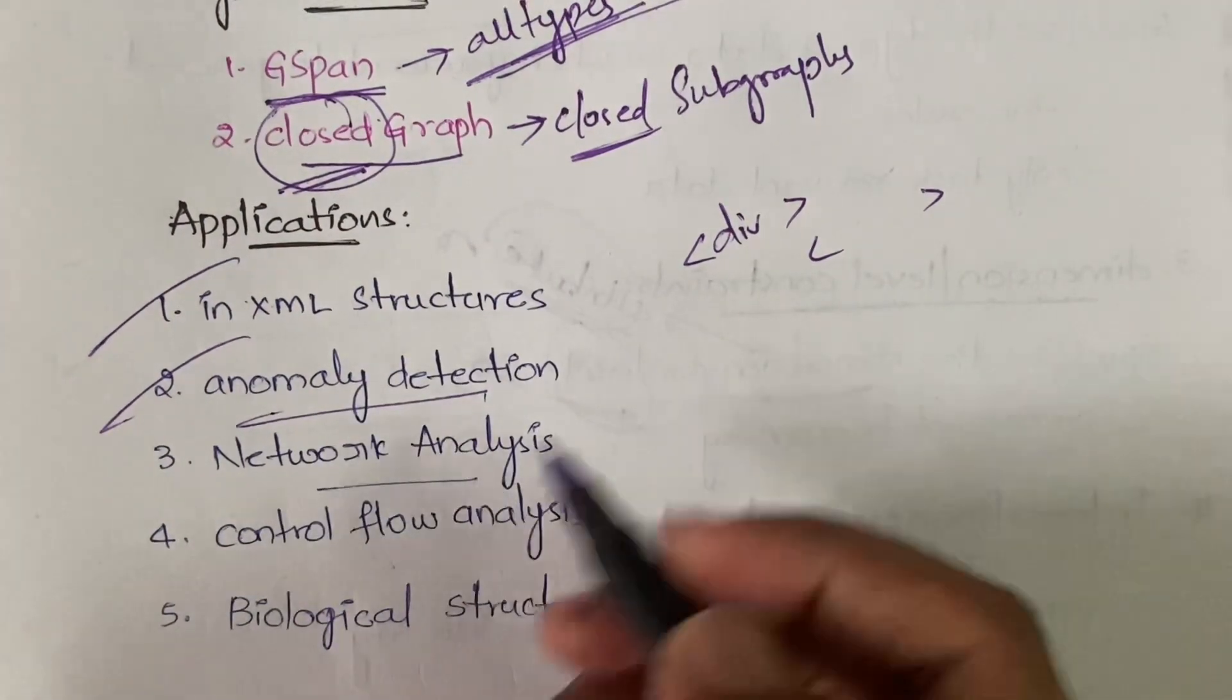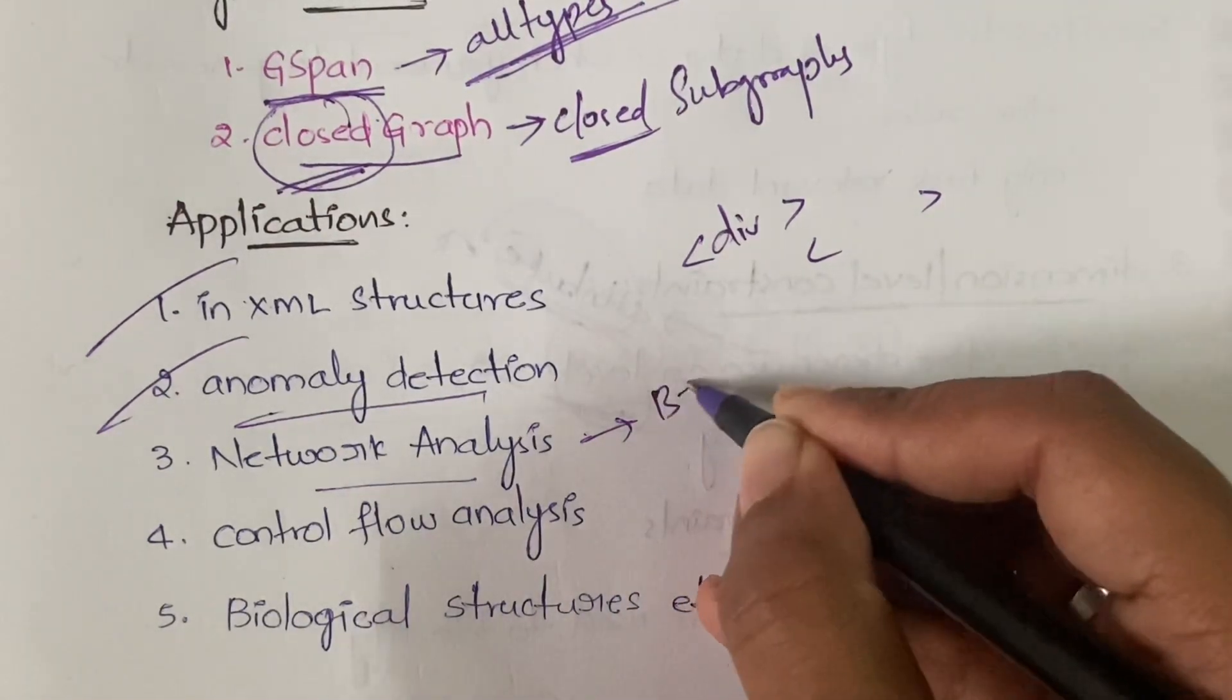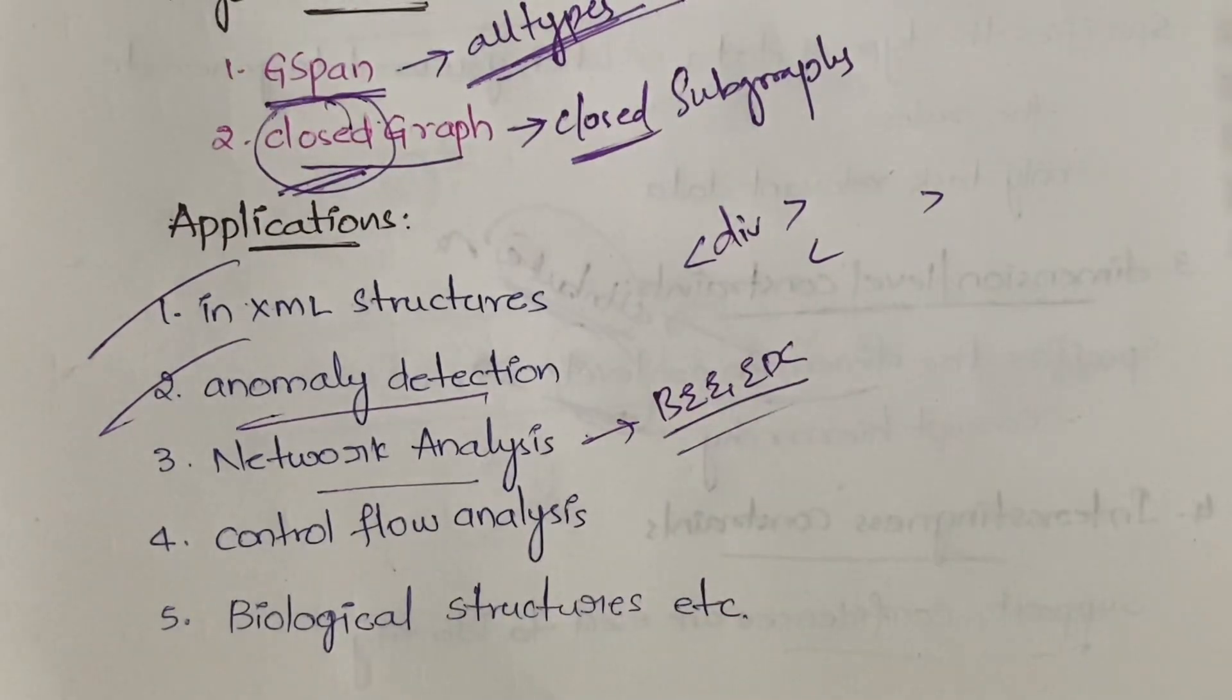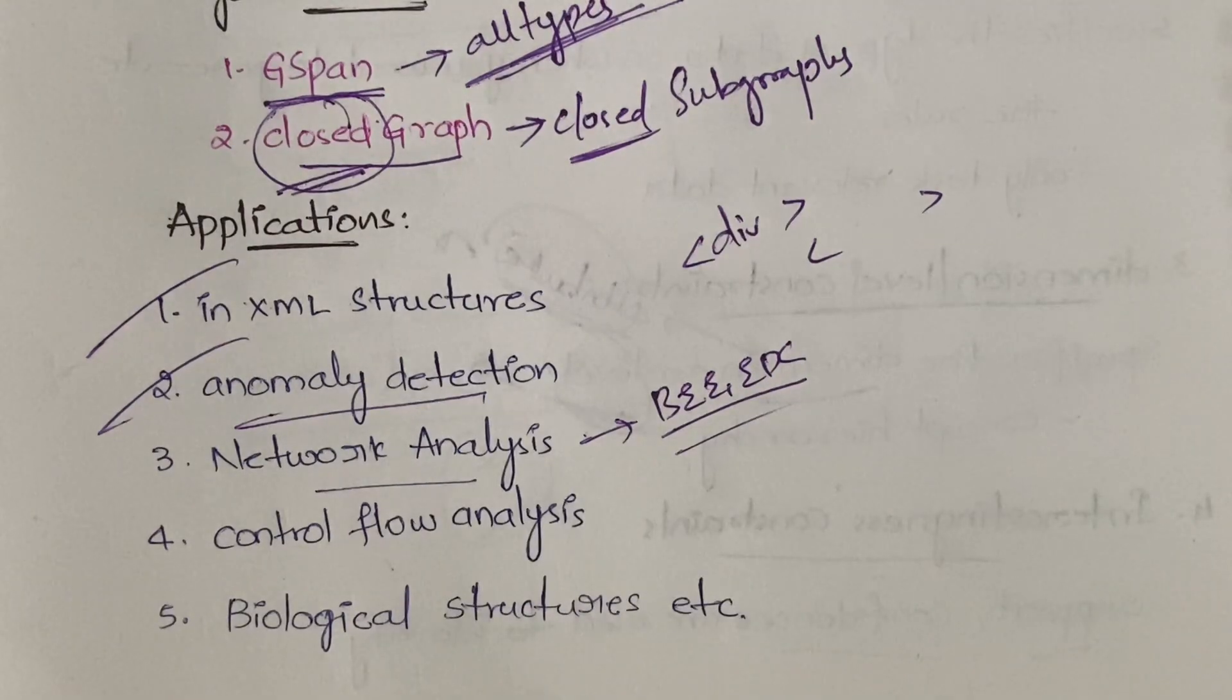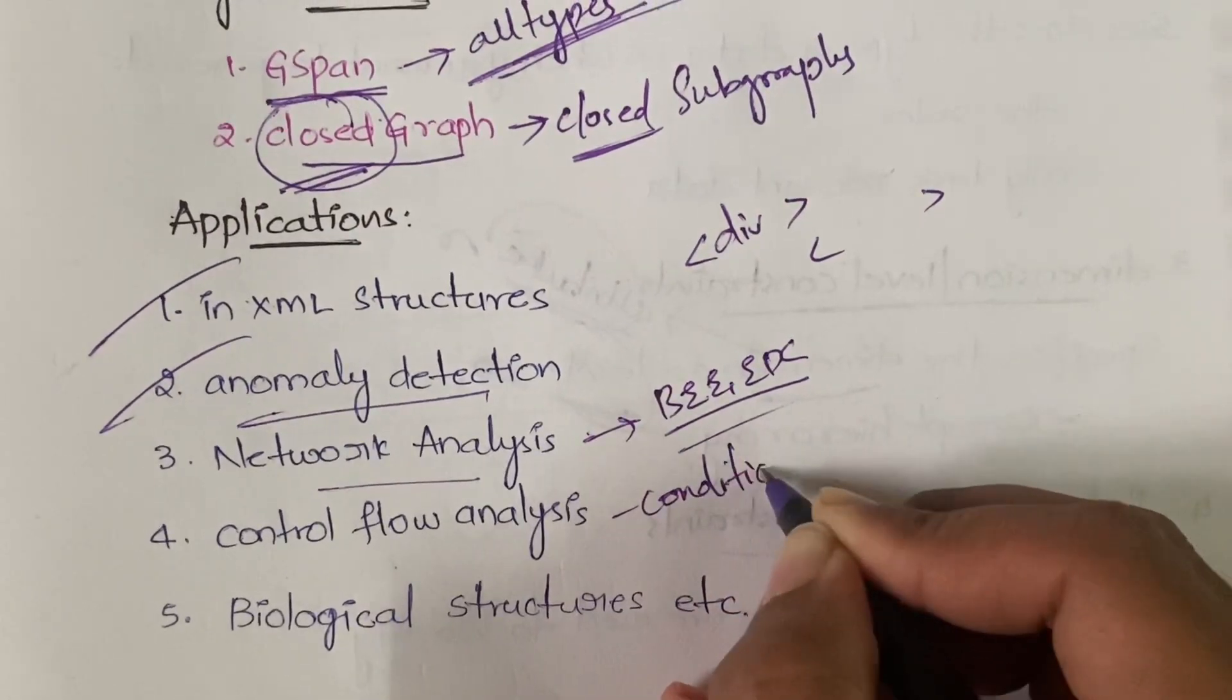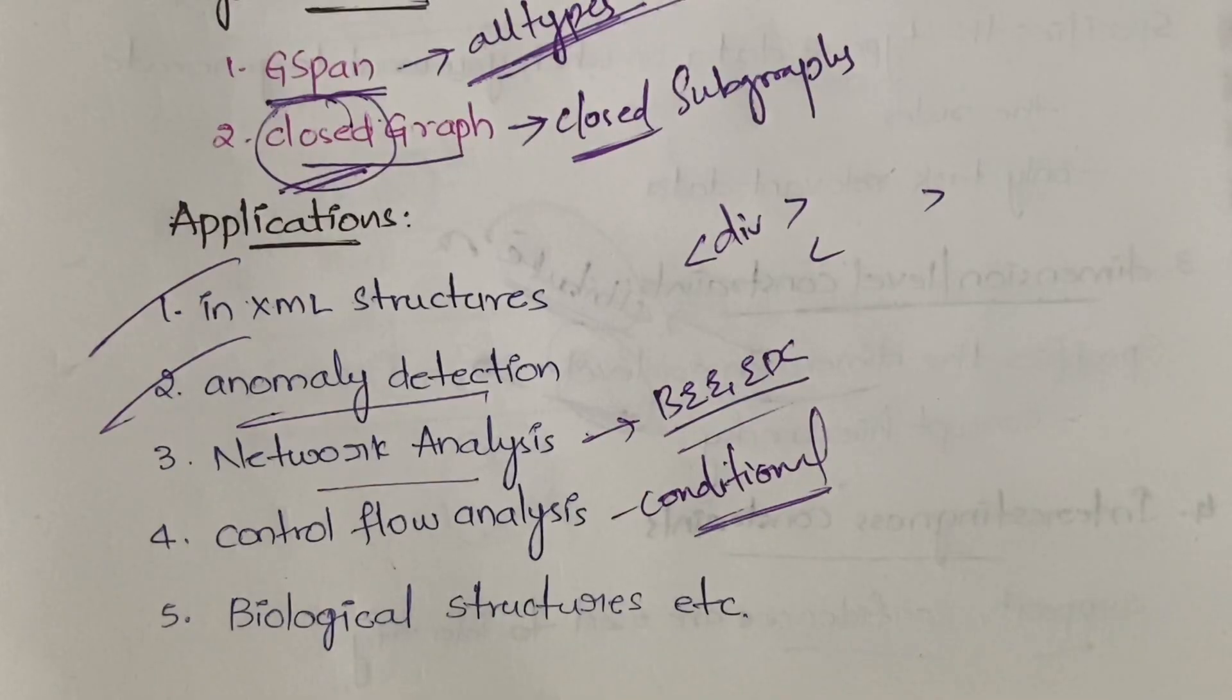In case of network analysis you can use this - you know what network analysis is. We did it in BWEDC and even in network security we do it. And in control flow analysis - that is, how the flow is going in case of conditional statements like if-else statements, how the control is going between the statements.